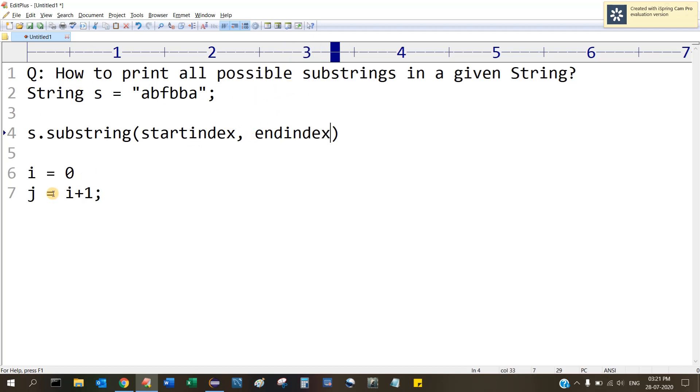So initially we are initializing i with zero, so our i value is here. And then j is equal to i plus one, so j will start with one. So the initial value would be zero comma one, which is 'a'.